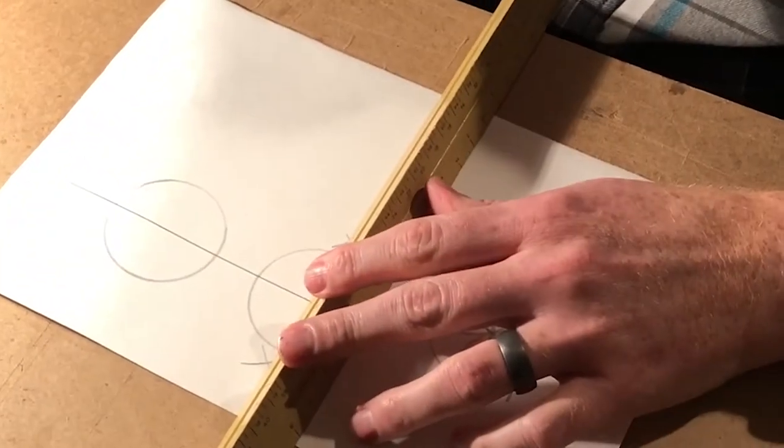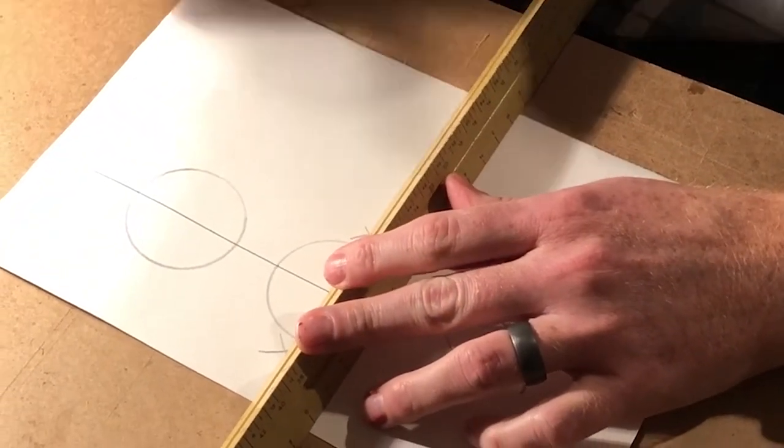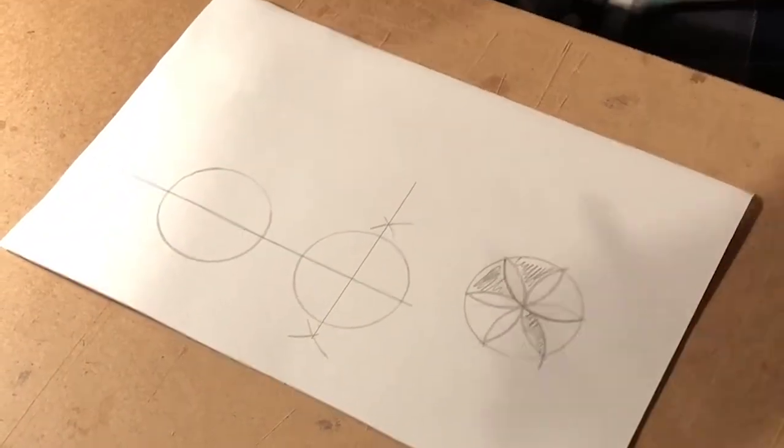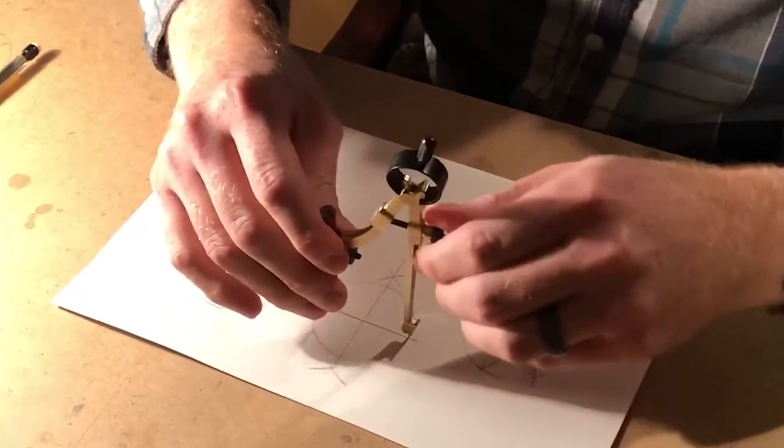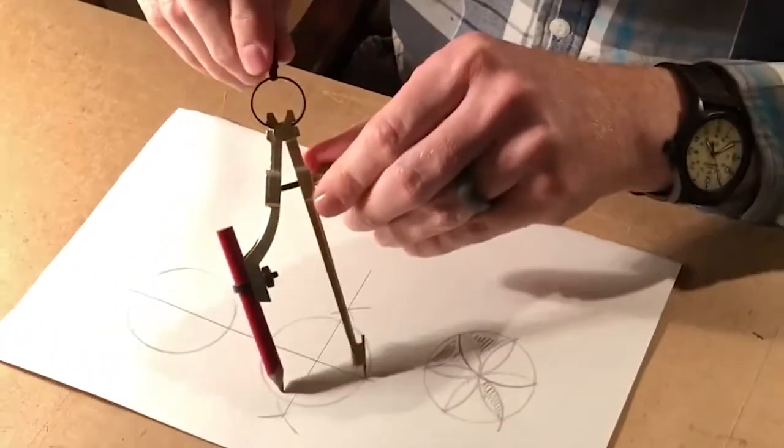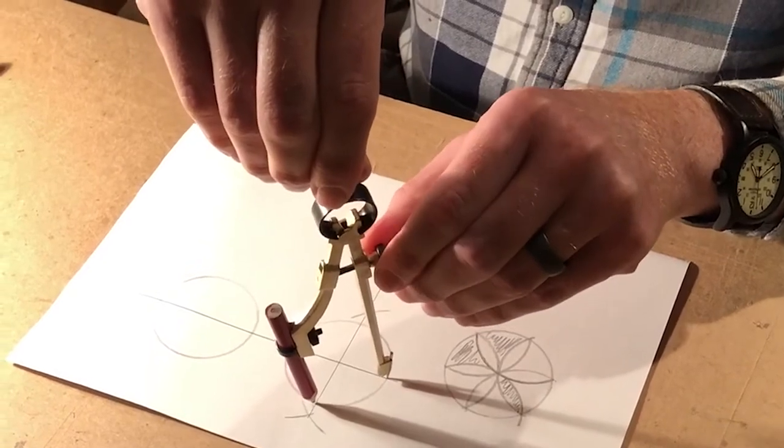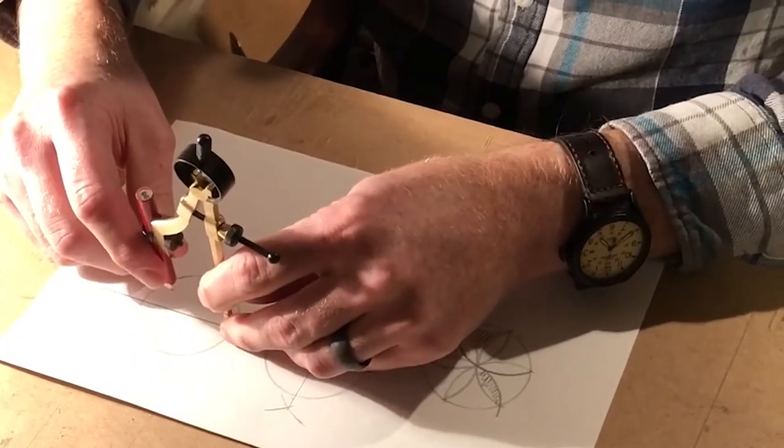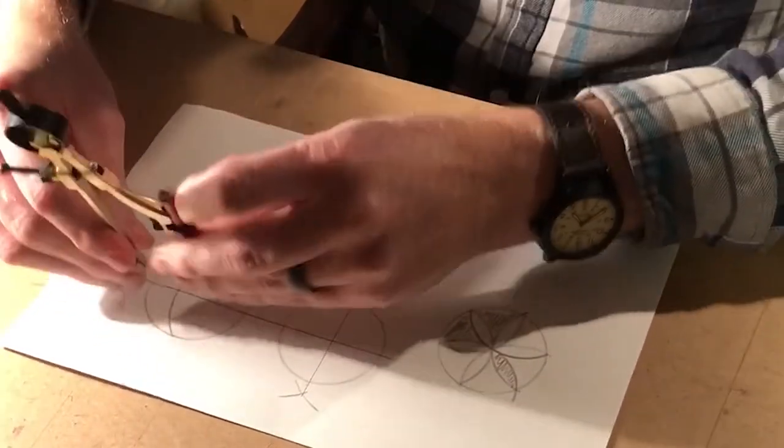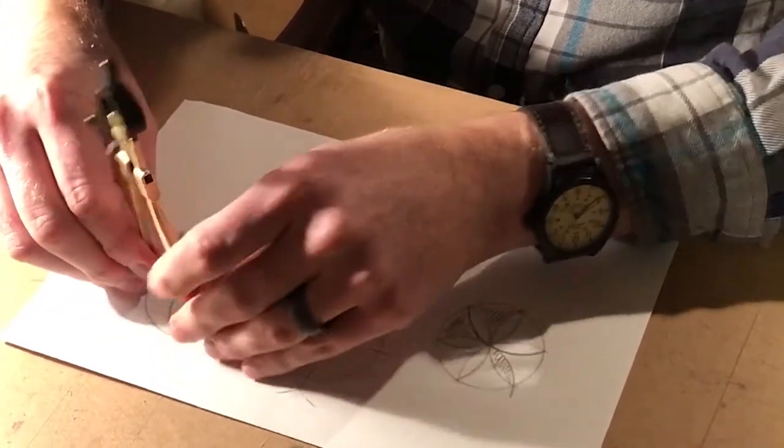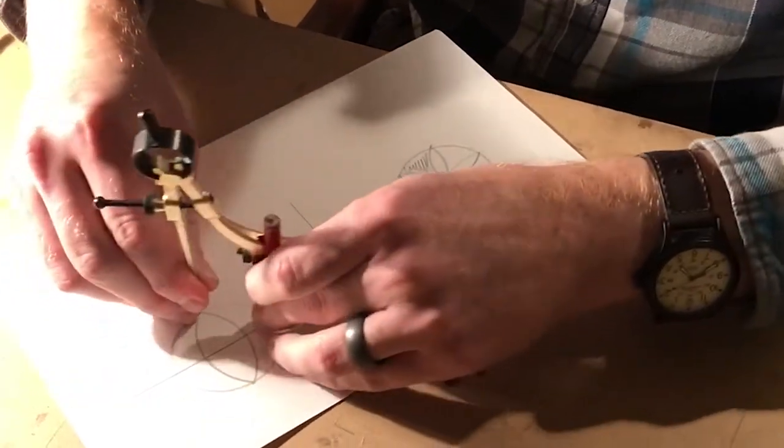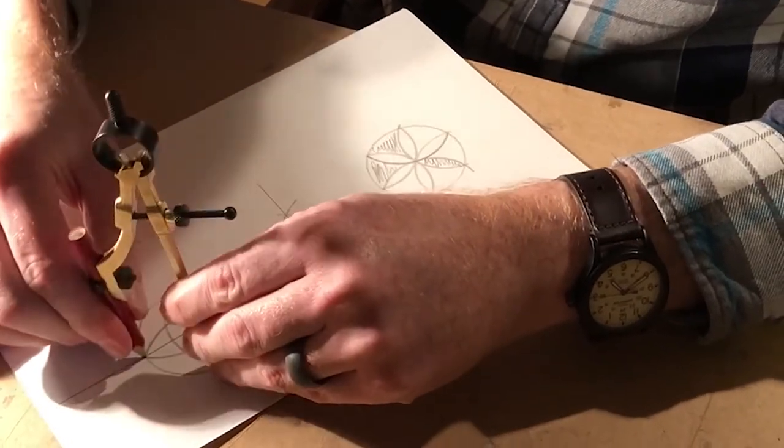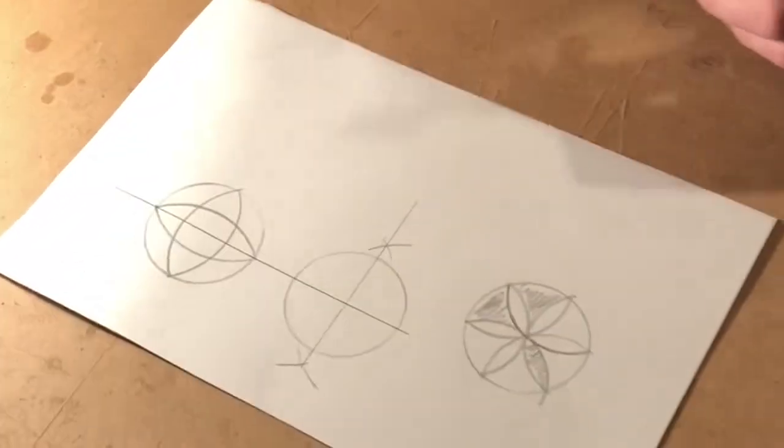When you connect those two point intersections, you have a four-point rosette. Then you get to play around with it. If I put my opening of my compass between these two points, I'll show you what happens—you get this design like that, or you could get something completely different.